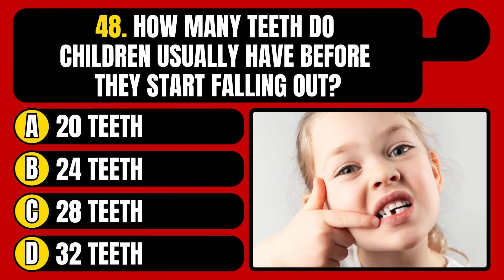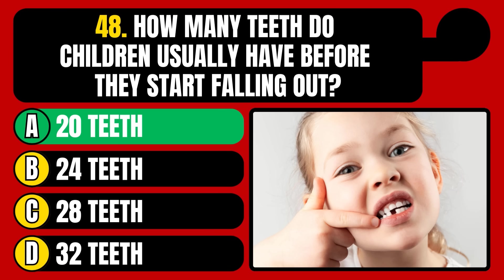How many teeth do children usually have before they start falling out? 20 teeth, 24 teeth, 28 teeth, or 32 teeth? The correct answer is option A, 20 teeth.